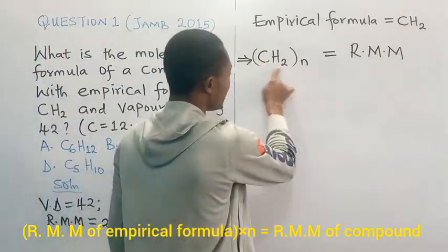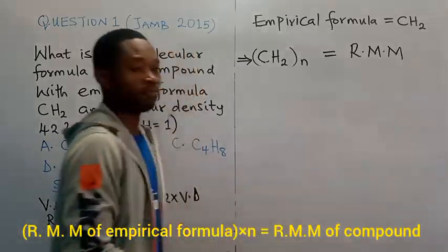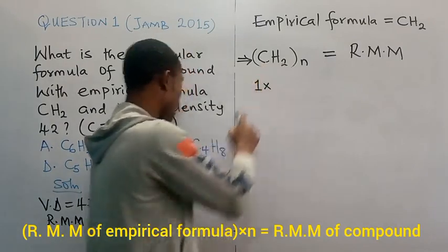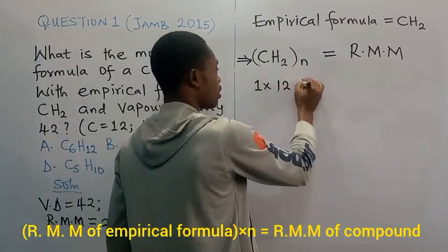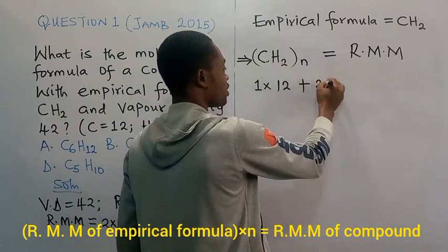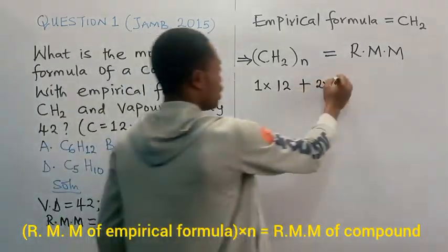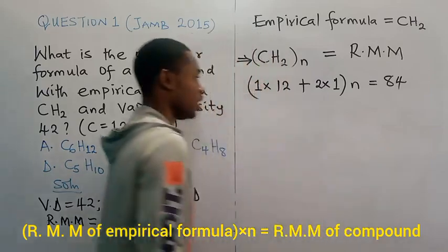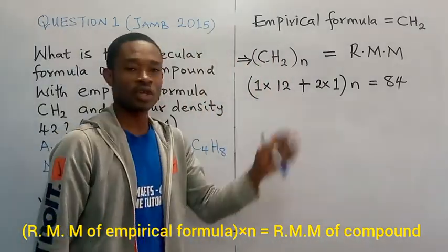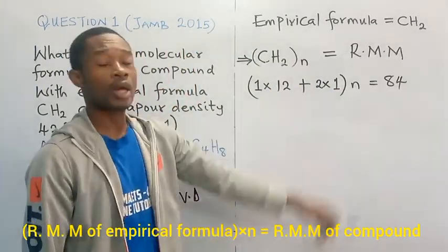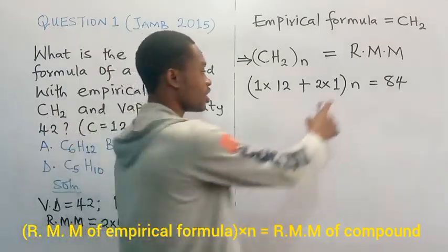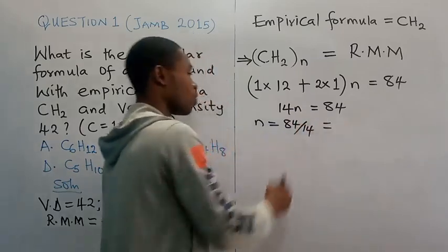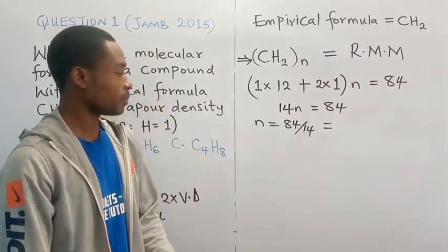To find N, we obtain the relative molecular mass of the empirical formula CH2: that is (1 × 12) + (2 × 1) = 12 + 2 = 14. Multiplying by the unknown N and equating to 84: 14N = 84, therefore N = 84 ÷ 14 = 6.